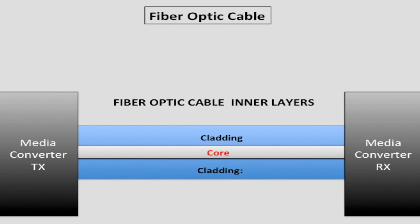The outer jacket is there to protect the cable from external elements like rain or snow. Whenever light strikes the core-cladding boundary at a certain angle, it reflects back into the core, allowing the signal to travel long distances without significant loss or interference.